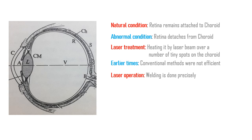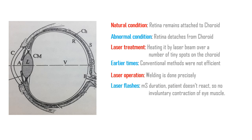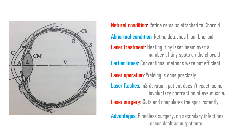A tiny laser beam of predetermined intensity enters from the front of the eye, passes through transparent tissues and liquid parts such as aqueous and vitreous humors to reach the exact spot where the welding is needed. The beam is just a flash that lasts for about a millisecond. For such a short duration, the flash just escapes the notice of the patient and hence avoids any involuntary contraction of the eye muscle. The laser energy cuts and coagulates the spot instantly, so it's a bloodless surgery.